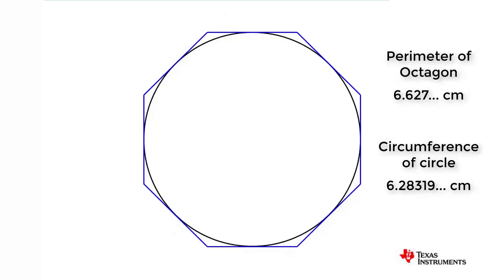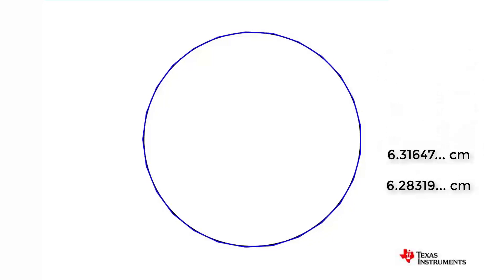In fact, with each additional side, we get a better and better approximation to the circumference of the circle. You'll notice that the perimeter is decreasing with each additional side, but it doesn't decrease to zero. It gets closer and closer to a specific value, the circumference of the circle.